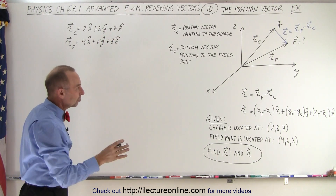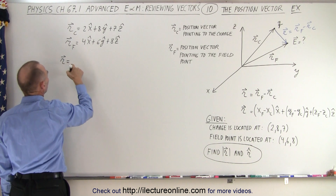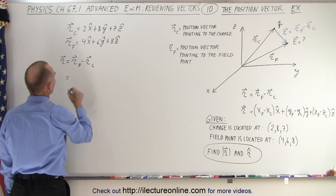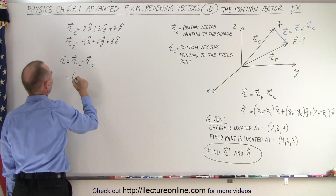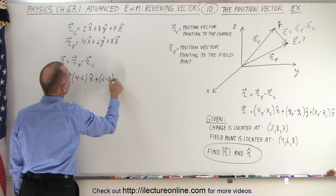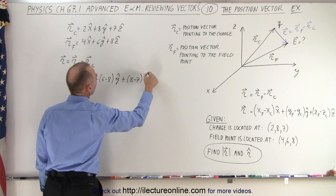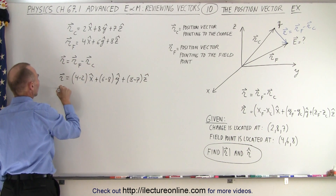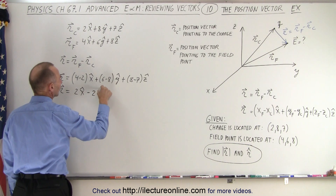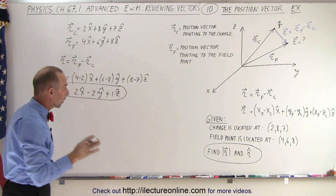Now we define the position vector of the field point relative to the charge. R equals R_field minus R_charge, which is the difference between the field position and the charge position: (4−2) in x, plus (6−8) in y, plus (8−7) in z. So the position vector from the charge to the field point is 2x̂ − 2ŷ + 1ẑ.